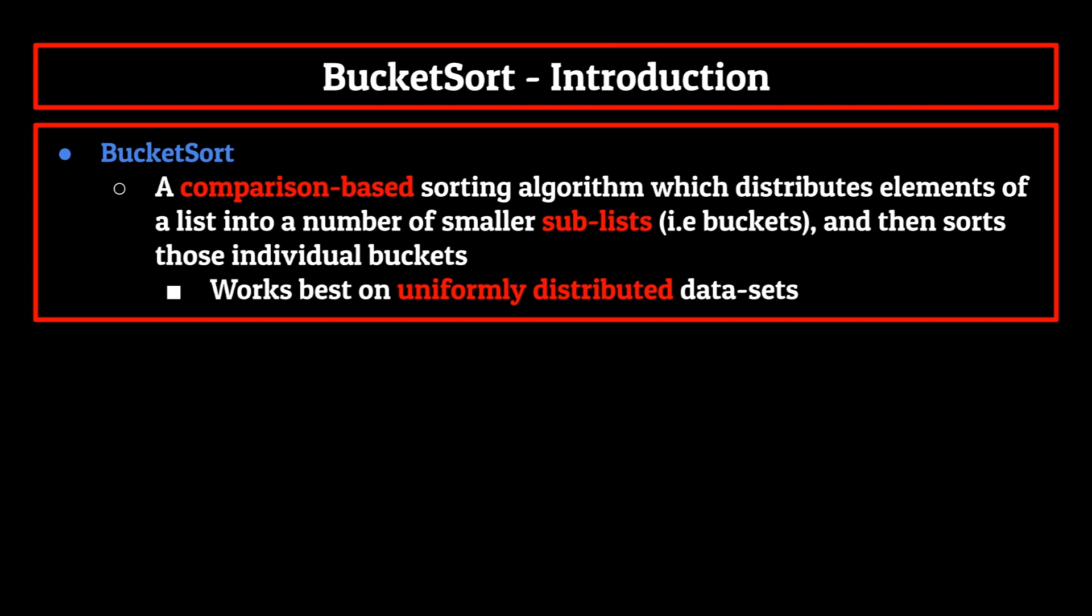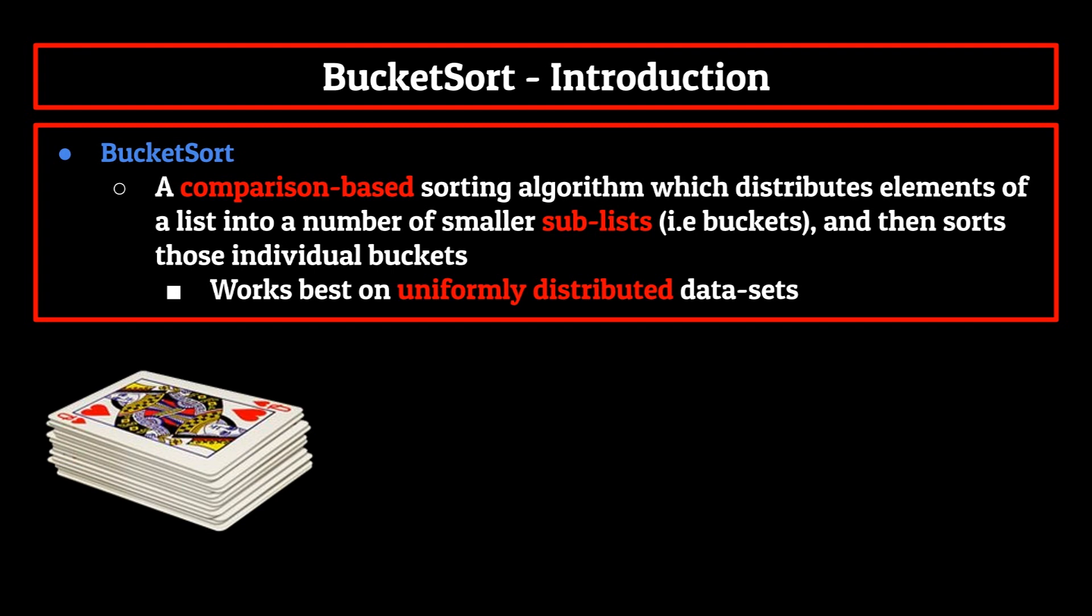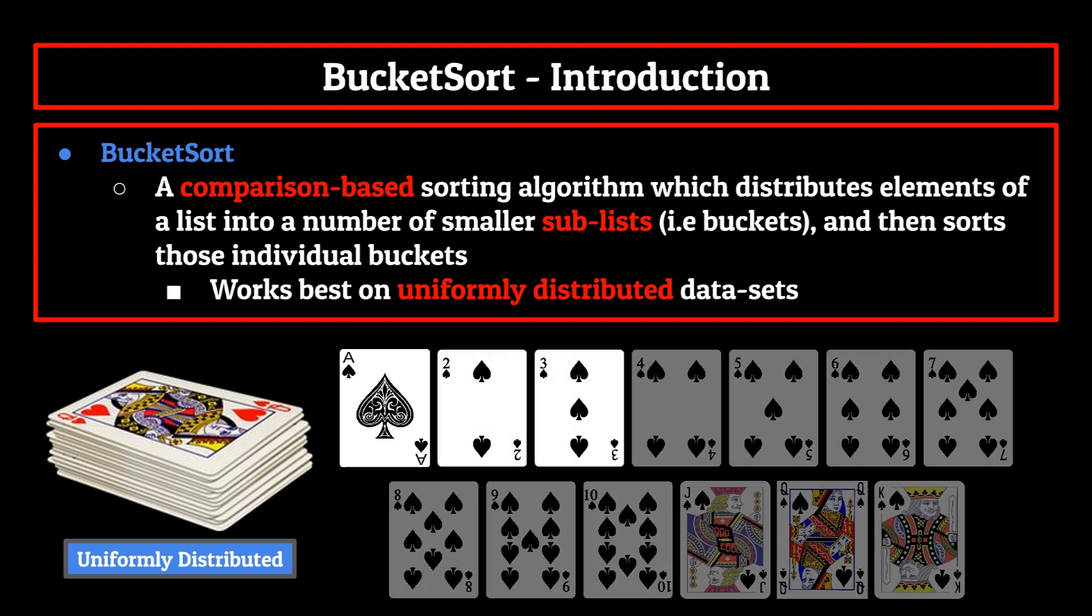The easiest way to picture how bucket sort works is through a quick real world example. Take a standard deck of cards, shuffled. You first might recognize that all of the cards are somewhat evenly distributed, with values ranging from 1 to 10, then jack, queen, and king in that order.